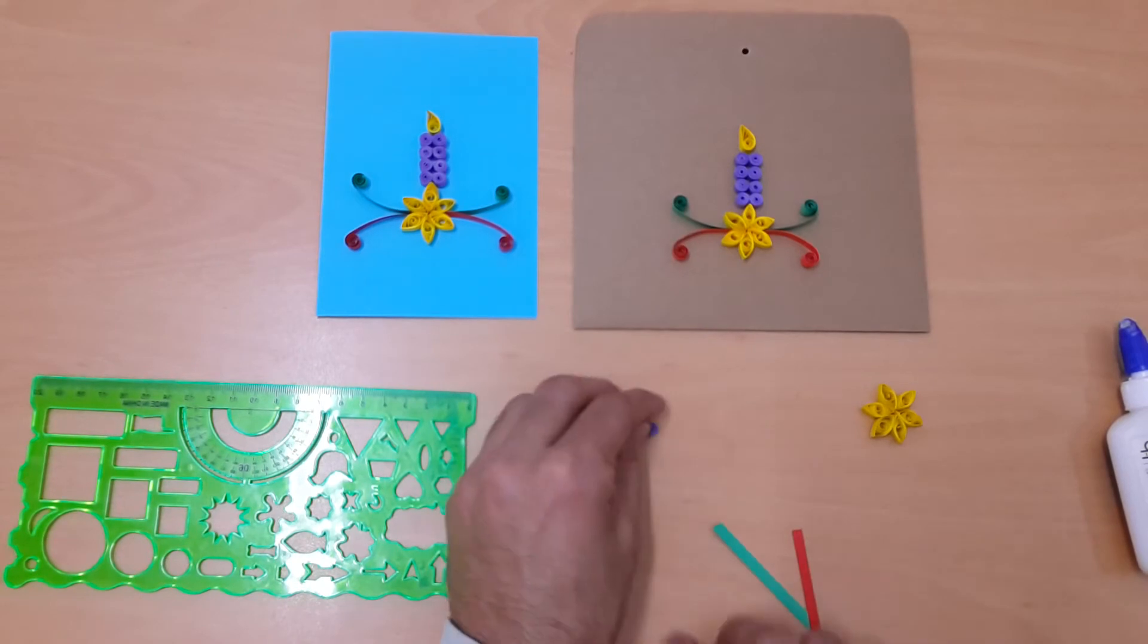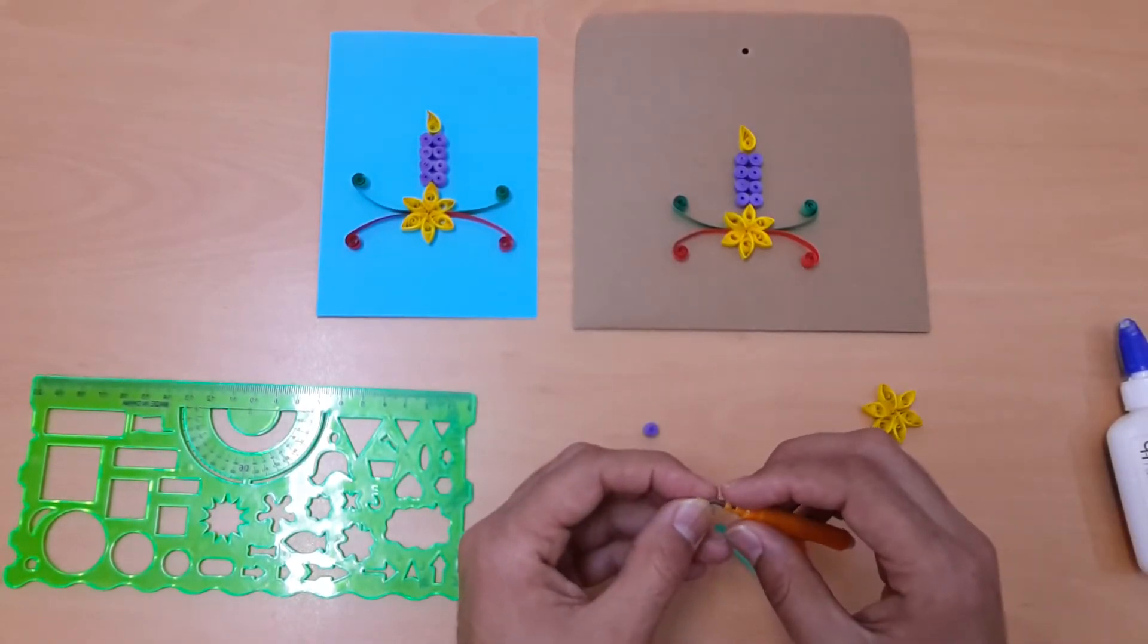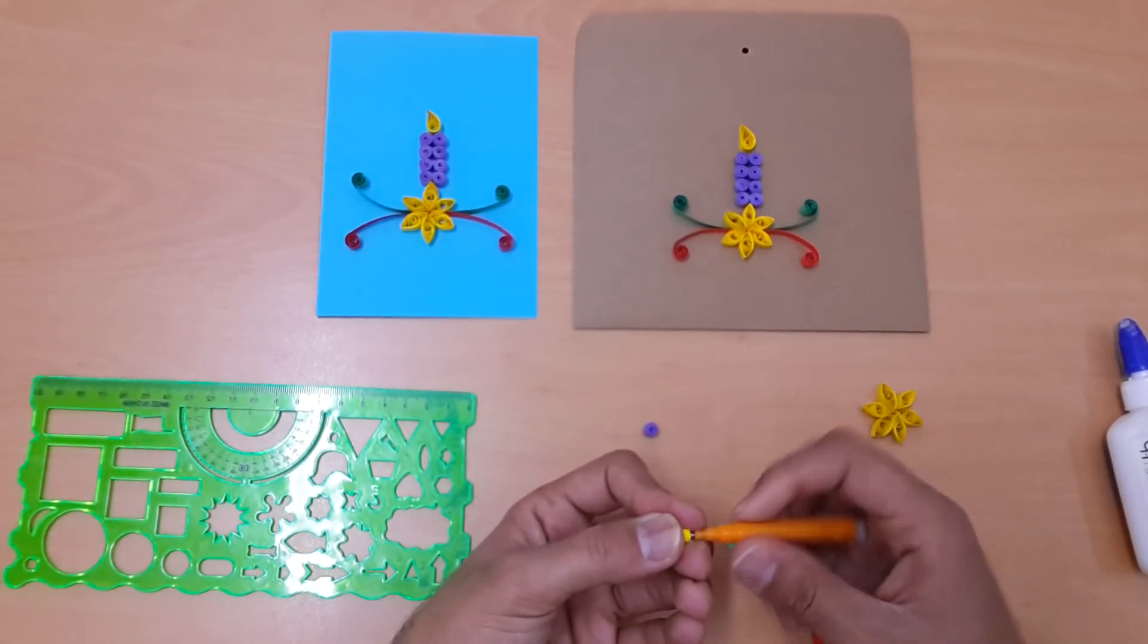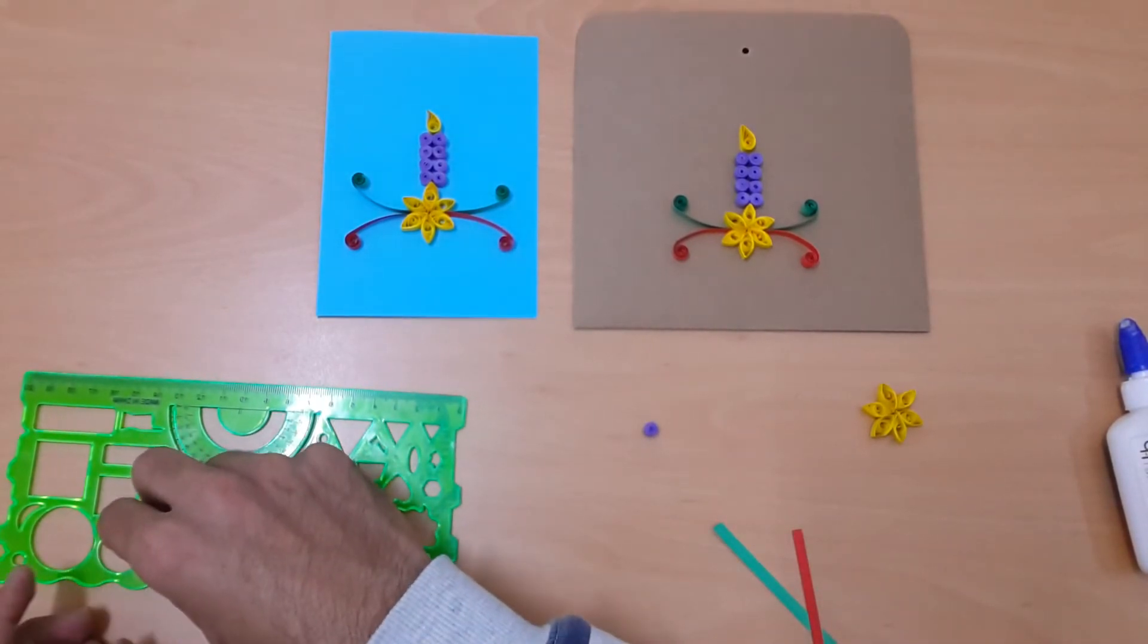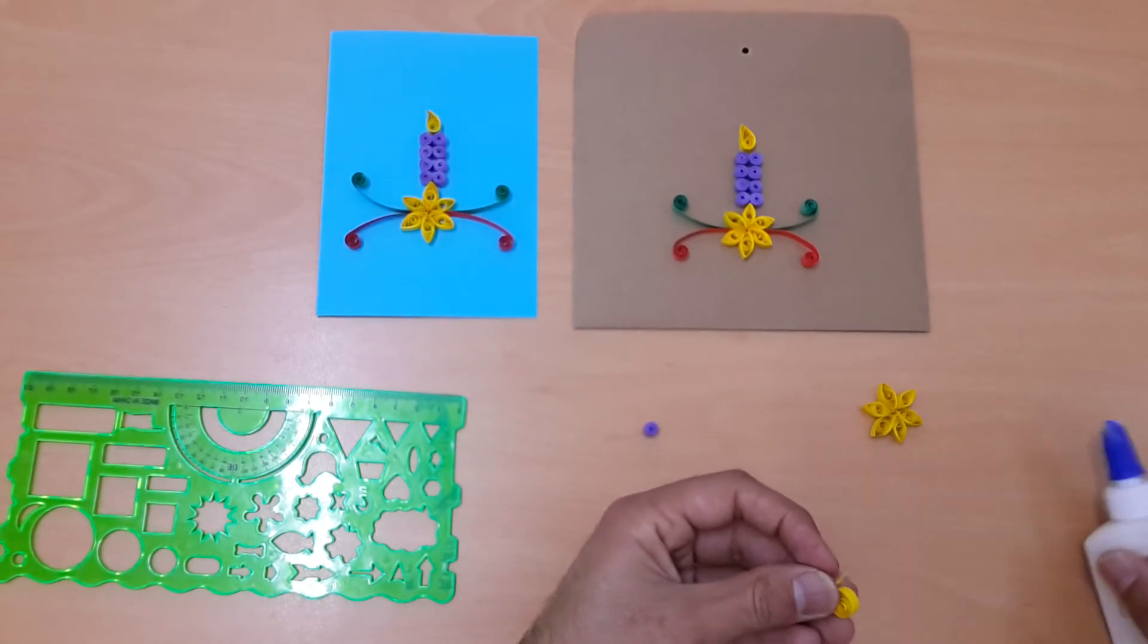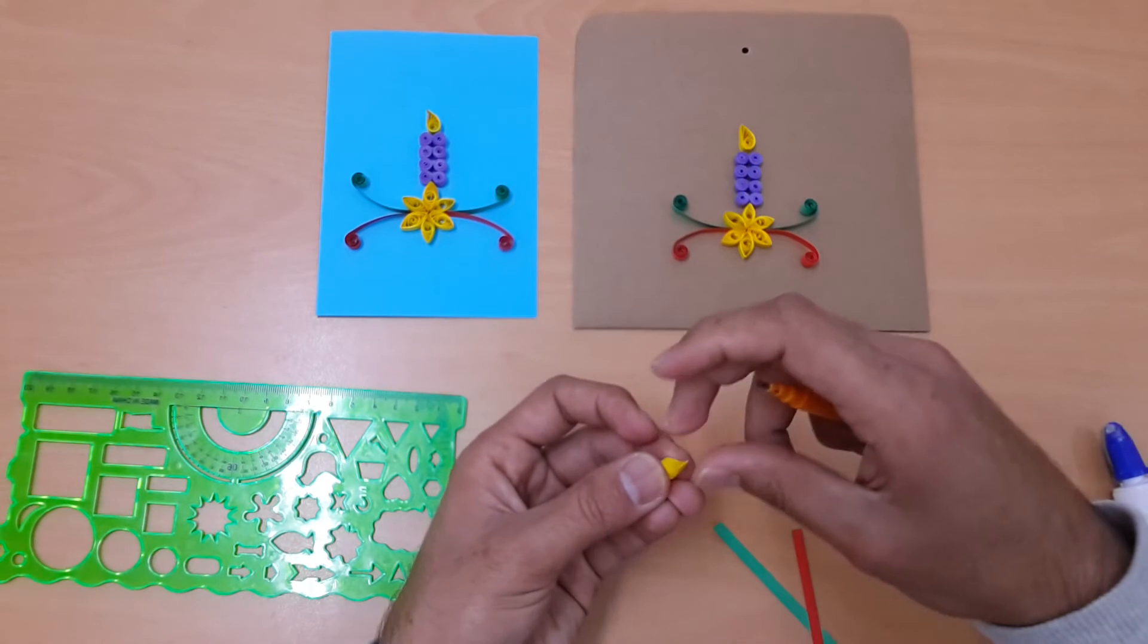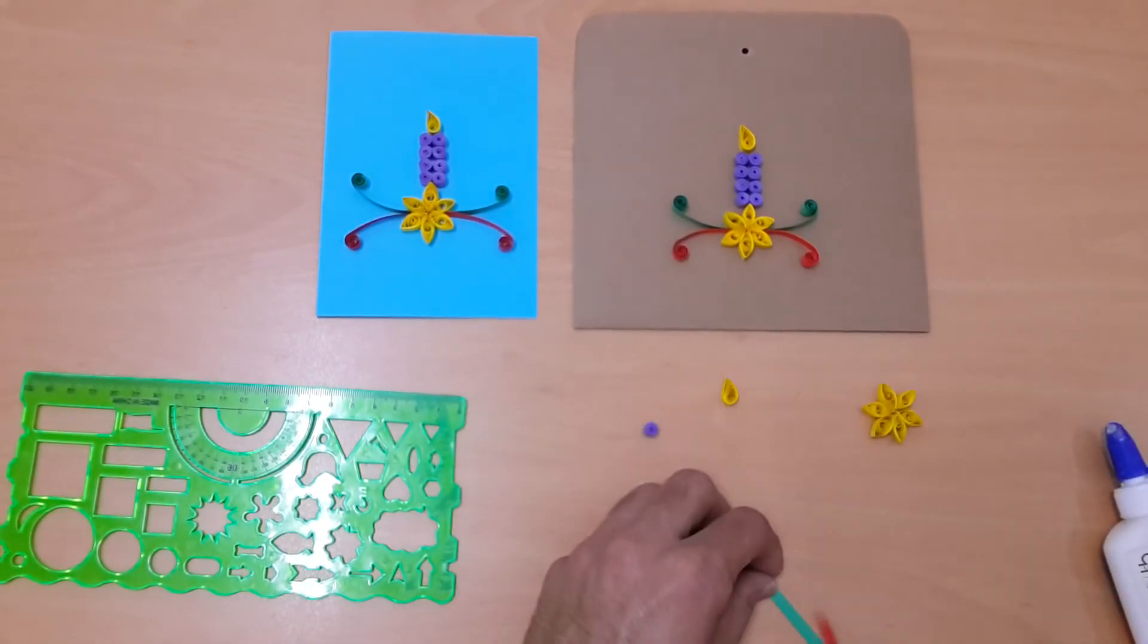Now we have to make the fire of the candle. For that we need a 150mm yellow strip. We have to do the same strategy like the flower - 12mm round dia. Put the glue and make the curvy petal shape for the candle.